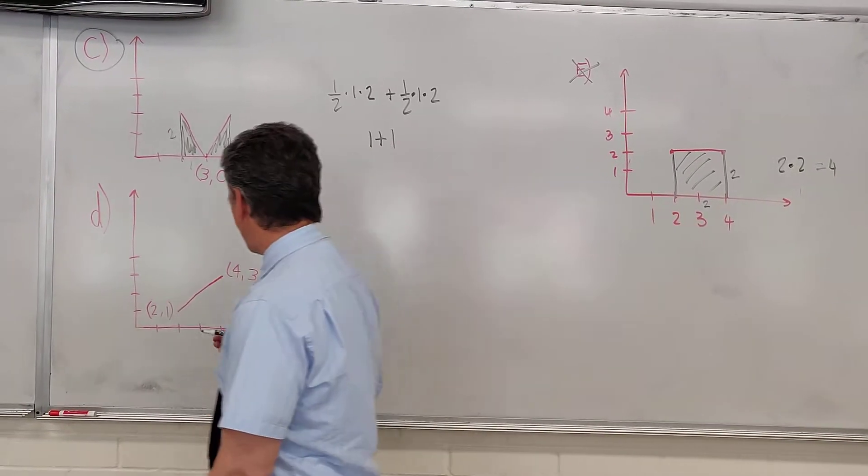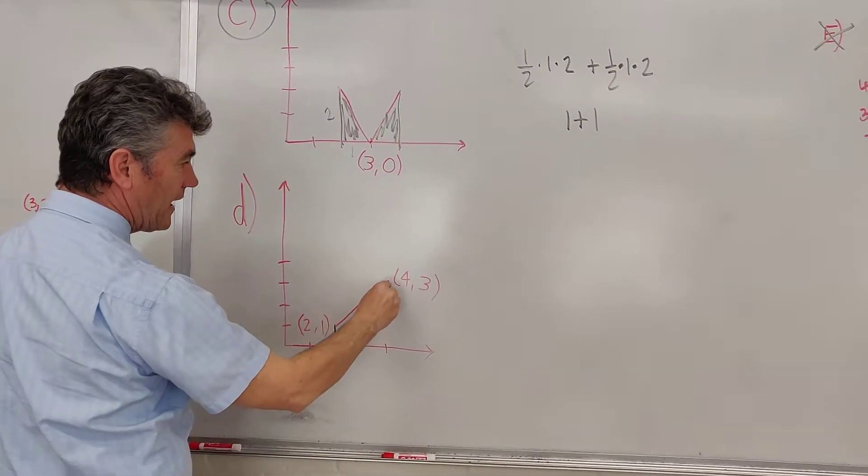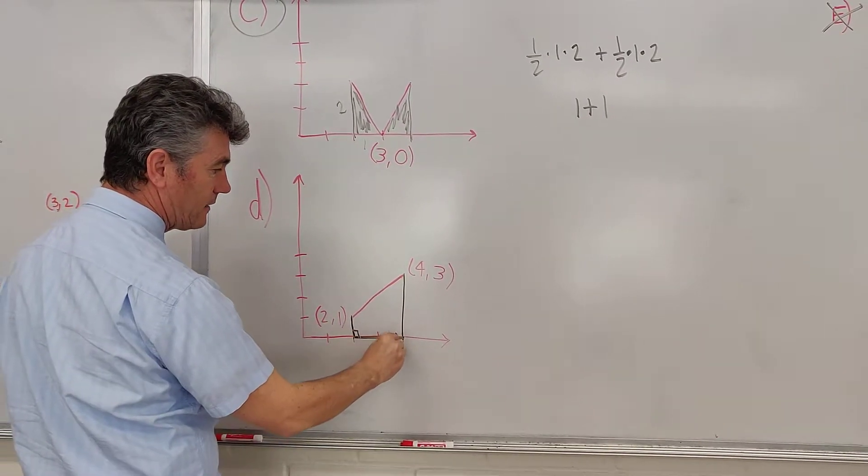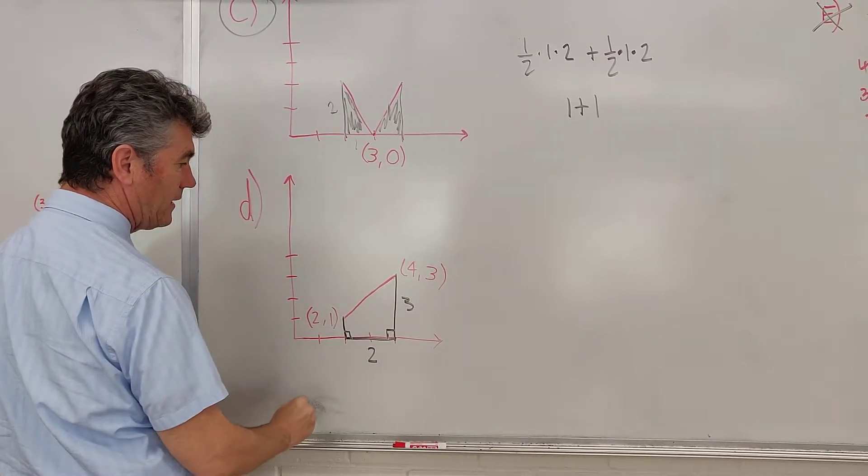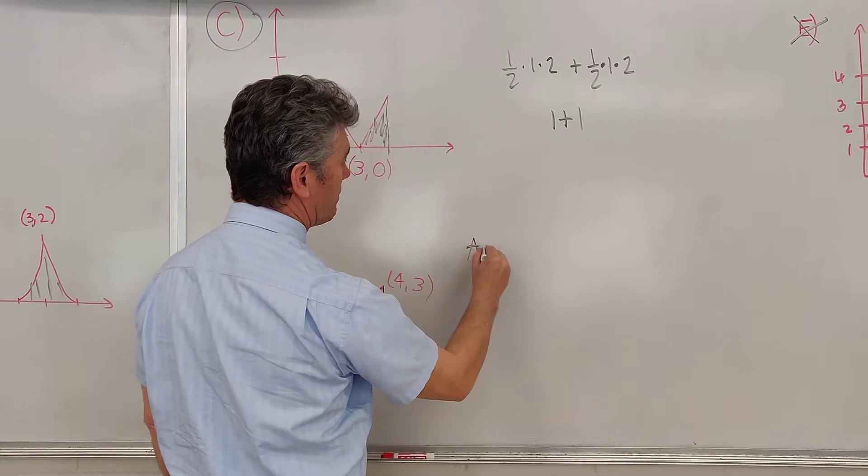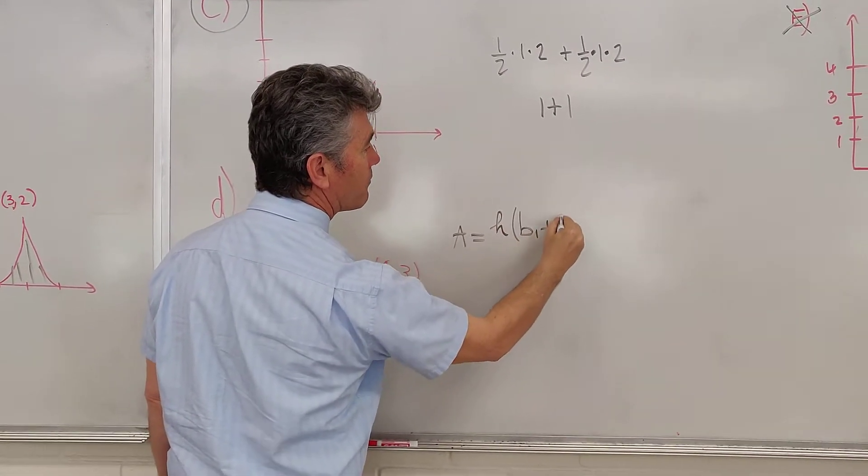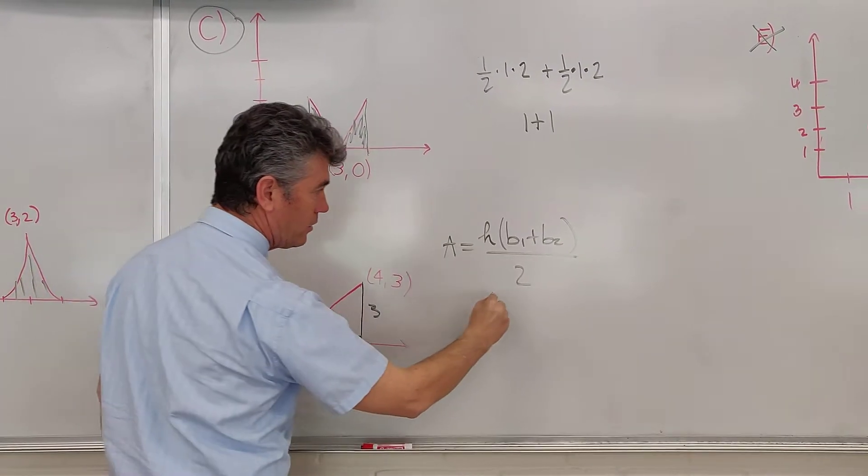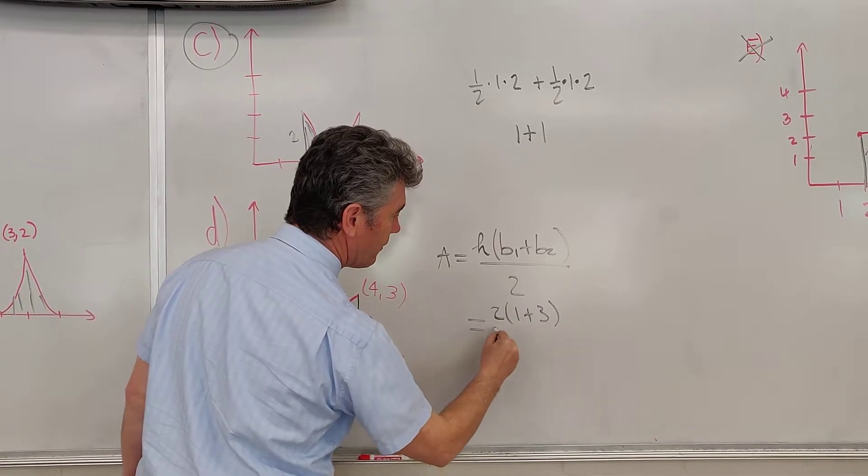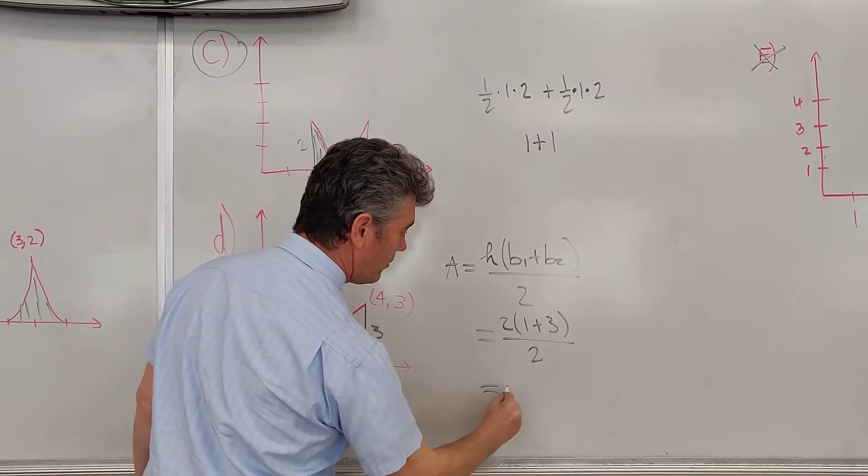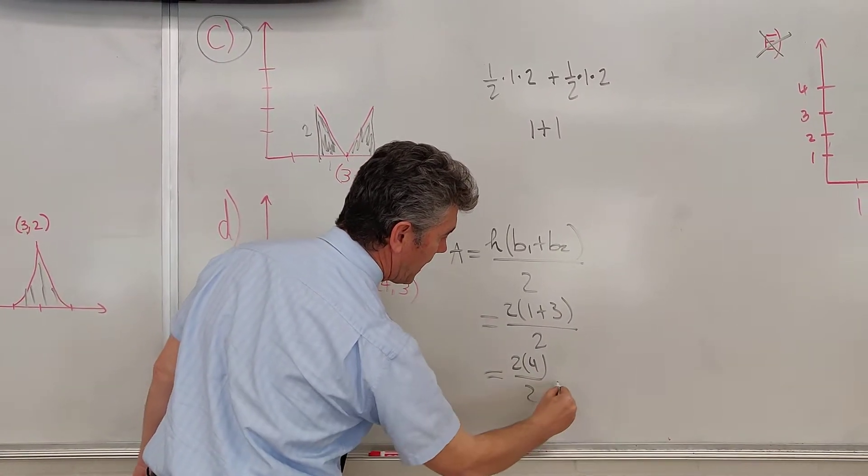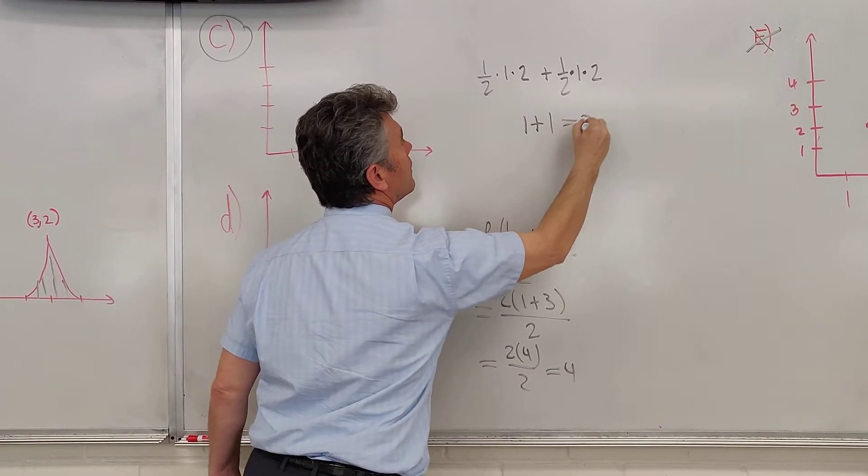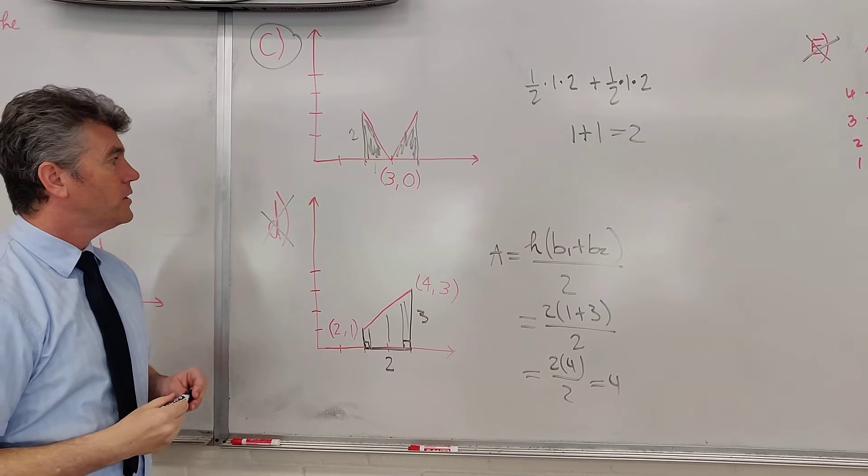And if you'd rather do D as well, in part D, what you're dealing with is a trapezoid. The height is equal to 2. One base is 3, the other base is 1. The area of the trapezoid, might as well review it, is one half times base 1 plus base 2 times height. The height is 2, one base is 1, the other one is 3. This is 2 times 4 divided by 2, and this is also equal to 4. No, 4 is bad. We need the area to equal 2. So this is also not the correct choice.